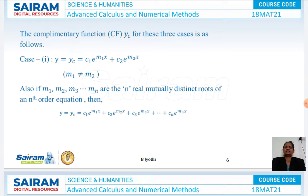Case 1: when roots are real and distinct, we have the solution yc = c₁e^(m₁x) + c₂e^(m₂x). Also, if there are n real mutually distinct roots of an nth order equation, then yc = c₁e^(m₁x) + c₂e^(m₂x) + c₃e^(m₃x) and so on.